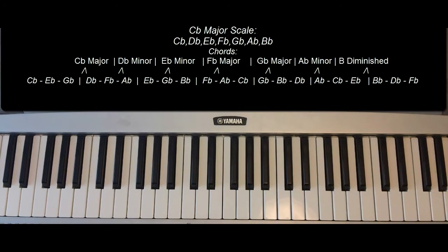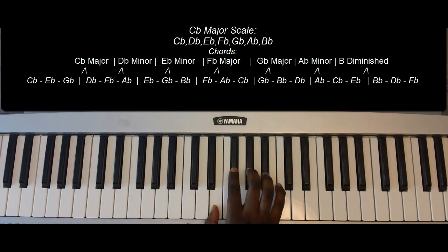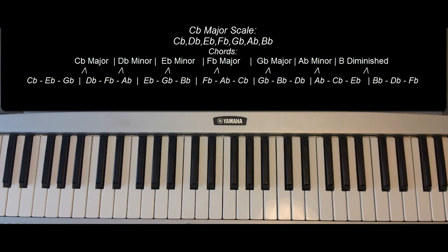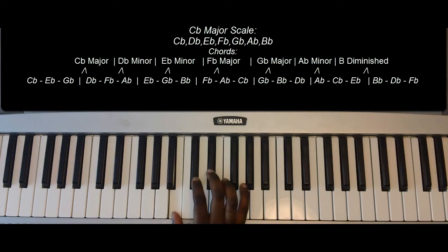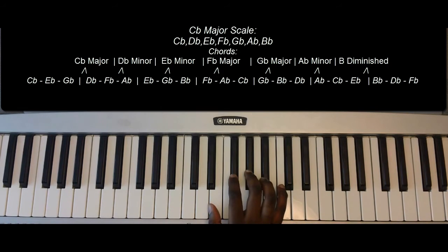The C-flat major scale is as follows. The notes for that scale are: C-flat, D-flat, E-flat, F-flat, G-flat, A-flat, B-flat, C-flat.